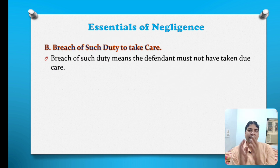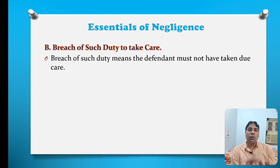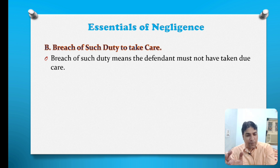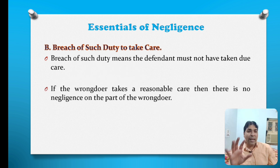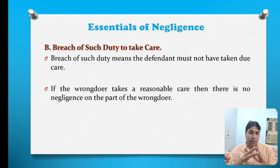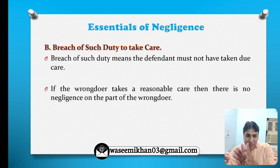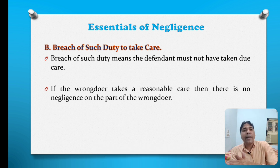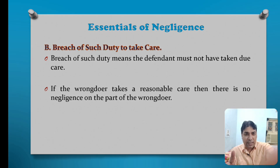The second essential of the tort of negligence is breach of such a duty to take care. Only having a duty to take care is not sufficient to hold a person liable for the tort of negligence until and unless that person commits a breach in such a duty. Breach of duty means the defendant must not have taken due care. If that duty to take care exists and the care is not taken by the defendant, then only he will be liable for the tort of negligence; otherwise not. If the wrongdoer takes reasonable care, there is no negligence on the part of the wrongdoer.